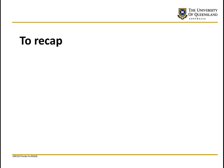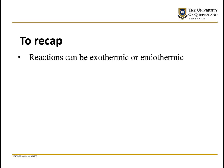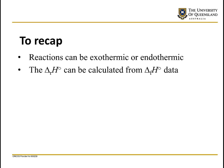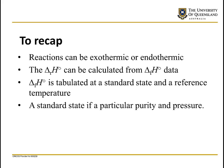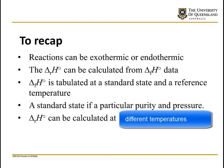To recap: reactions can be exothermic or endothermic. The heat of reaction at standard state can be calculated using heats of formation data at standard state. That data is tabulated at a particular pressure — normally one atmosphere — and at a reference temperature of 298 Kelvin. Note that temperature is not part of the standard state definition; the standard state is defined by purity and pressure. The heat of reaction can also be calculated at different temperatures using the path method covered in this video. Thank you for your time and attention.